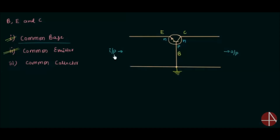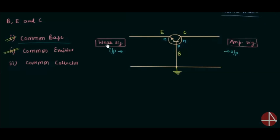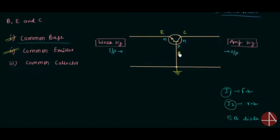I am calling this side the input side and this side the output side because a weak signal is introduced on this side and we have an amplified signal on this side. This will happen only when the transistor operates in active mode, so there is amplification of weak signal in active mode. There are two junctions in a transistor: junction J1 and junction J2. In active mode of operation, junction J1 is forward biased and junction J2 is reverse biased.